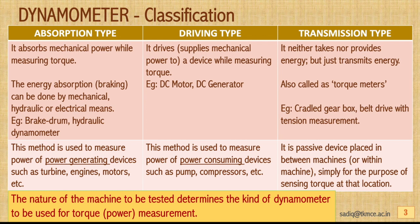Based on the way power is handled, there are three kinds of dynamometer classifications: absorption type, driving type, and transmission type. Absorption type dynamometers absorb mechanical power while measuring torque. The energy absorption is done by means of braking, which can be accomplished by mechanical, hydraulic, or electrical means. Examples include prony brake dynamometers and hydraulic dynamometers. This method is used to measure power of power-generating devices such as turbines, engines, and motors.